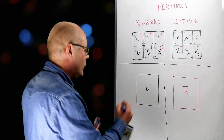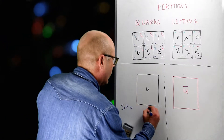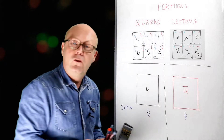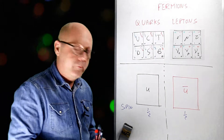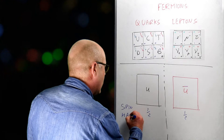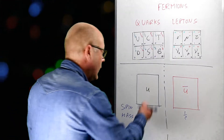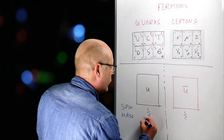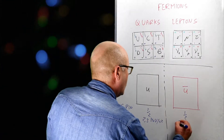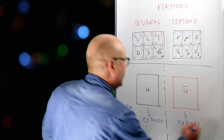When it comes to the spin, no change. Anti-particles are also fermions. When it comes to the mass, no change either. Here for the up, it was 2.3 MeV per c-squared. It will also be 2.3 MeV per c-squared for the anti-up.